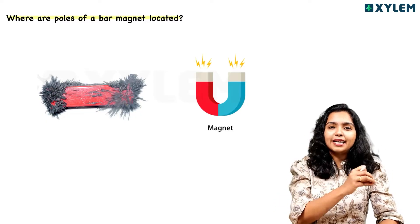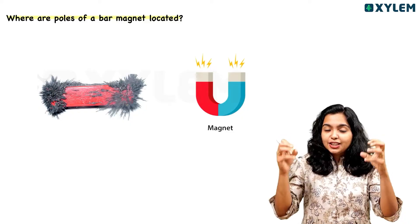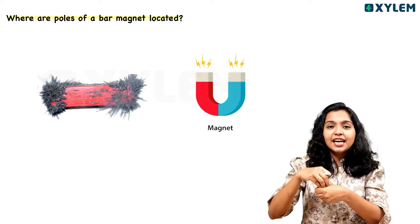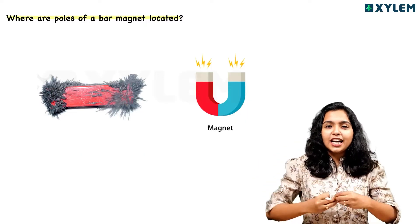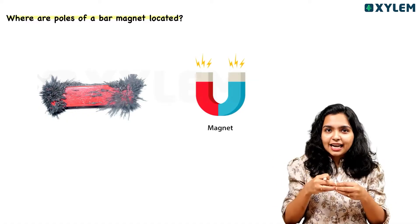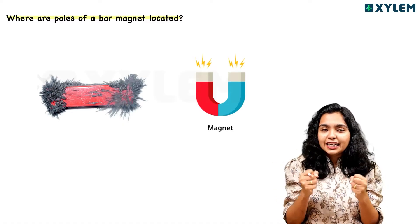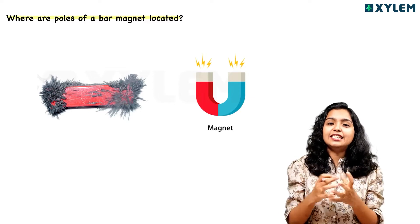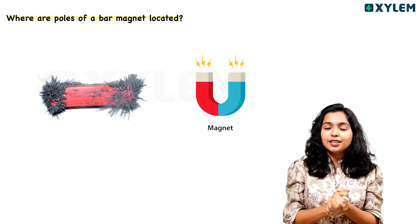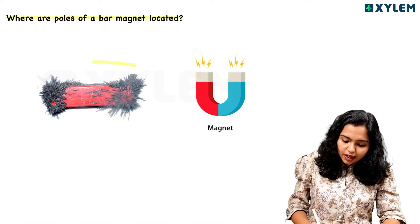If you want to locate the poles of a bar magnet, you can see the poles by spreading iron filings around a magnet. The iron filings arrange themselves in a pattern which is mostly dense towards the two ends of the magnet. The edge of the poles is where the iron filings are densest, showing the strength of the poles.